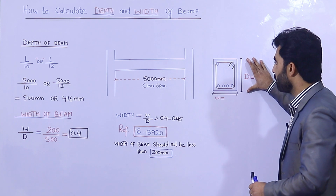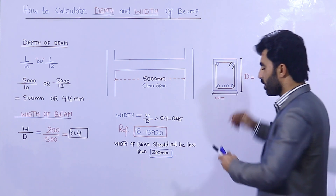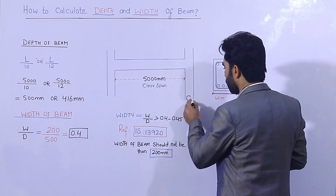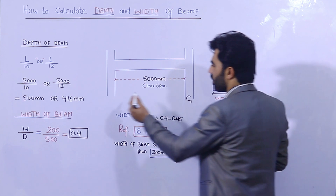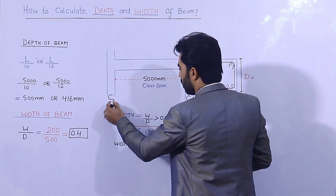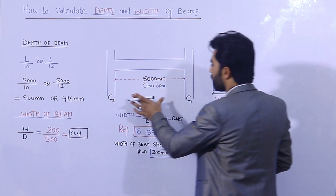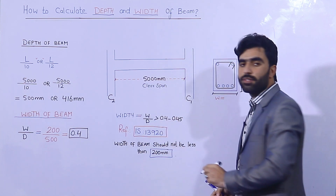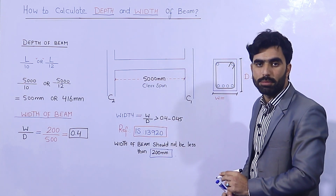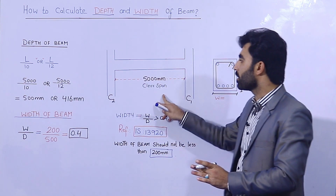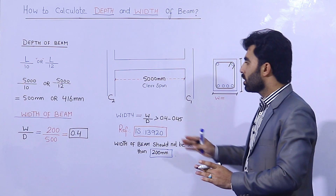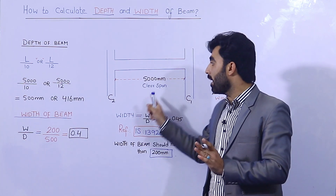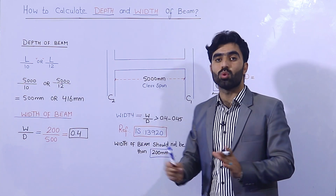As you can see, this is the section of a beam with column 1 (C1) and column 2 (C2). The clear span between the two columns is 5000 millimeters, or 5 meters.